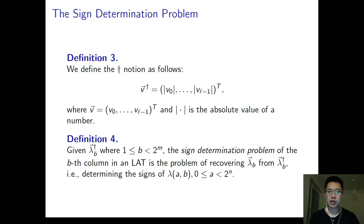We define the sign determination problem in the following. Before we define the problem, we need to show the cross notation as the following. V cross here is a vector of absolute values of the entries in the original vector. And the sign determination problem of the B column in the LAT is a problem of recovering lambda B from lambda cross. It is to determine the signs of a column in the LAT.